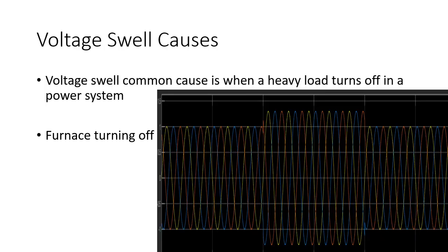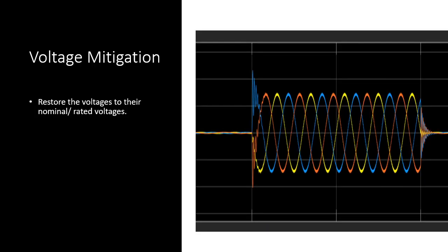What causes voltage swell? It's essentially the opposite of voltage sag. A common cause is when a heavy load turns off in a power system — for instance, a heavy furnace suddenly turning off due to some issue, causing a voltage swell. Another example for understanding, though not exactly a swell because it's not momentary, is the Ferranti effect in power transmission lines — where you need 230 volts but receive 250 volts.